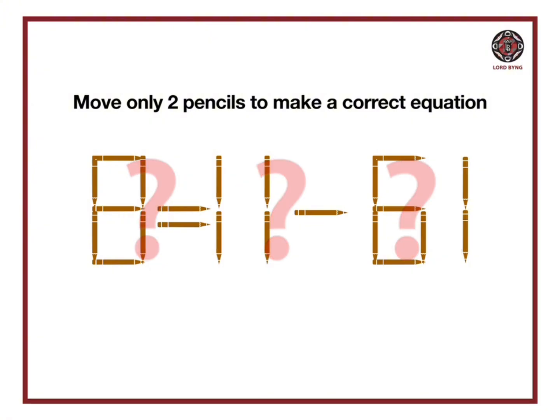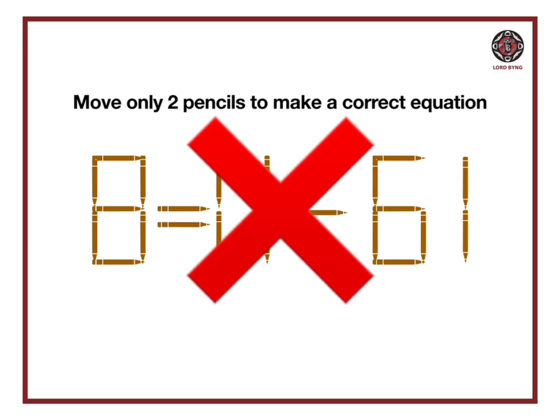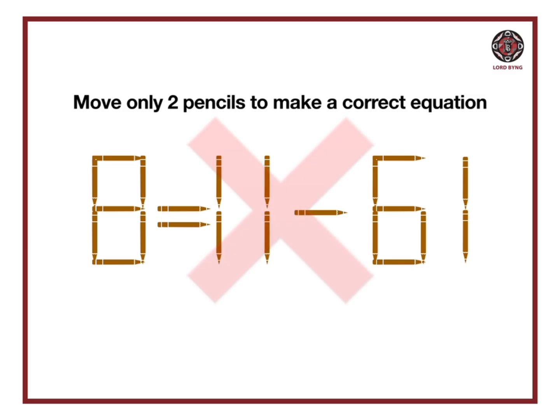Now, you might say 8 equals to 11 minus 61 is not a correct equation. But to get that, you have to change your perspective.